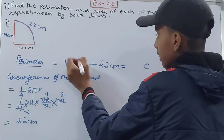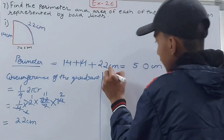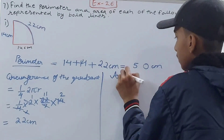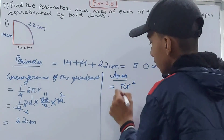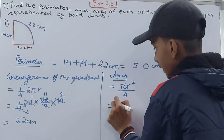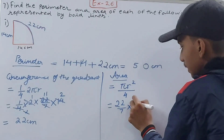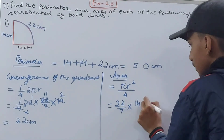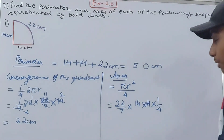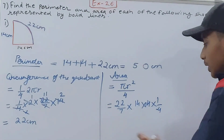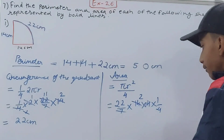Now we calculate the area. The area of a quadrant is πr²/4. So: (22/7) × 14 × 14 × (1/4). We can cancel: 4 and 14 — 14 divided by 4 gives... we cancel this and this will go 2, and this will go 2 times by 7.